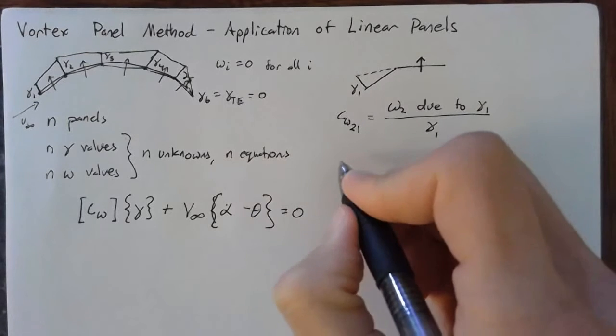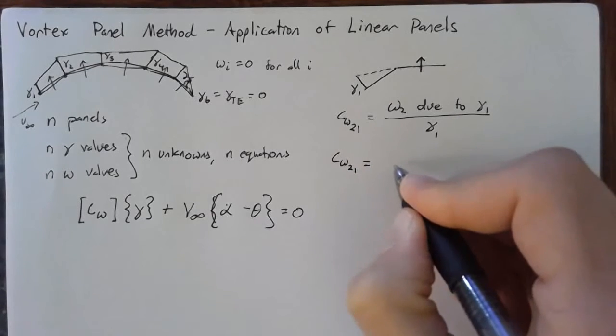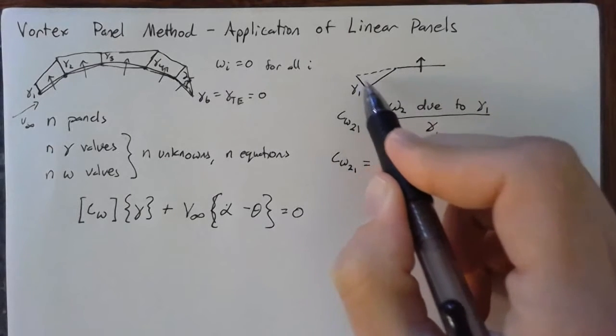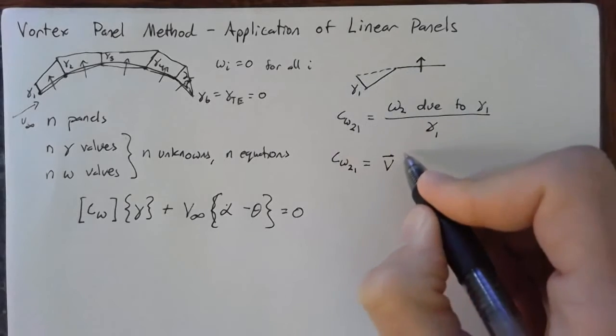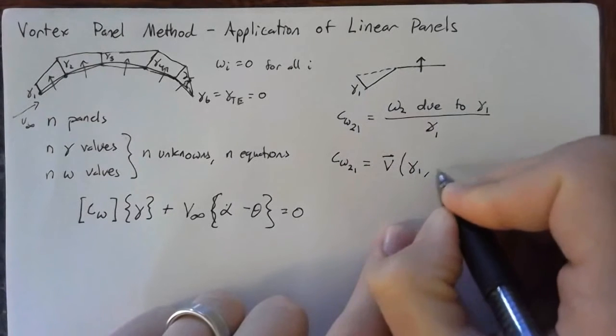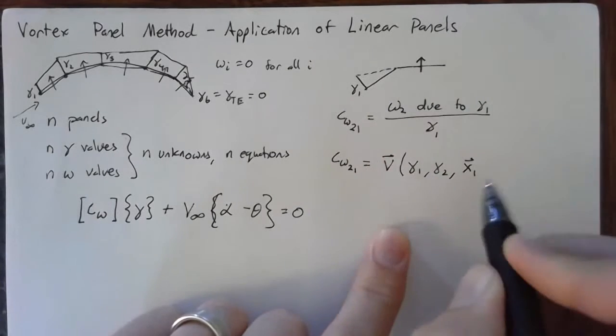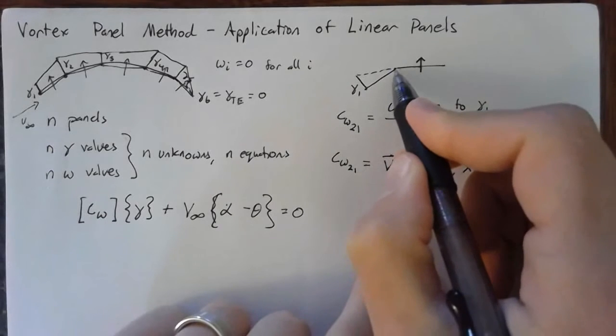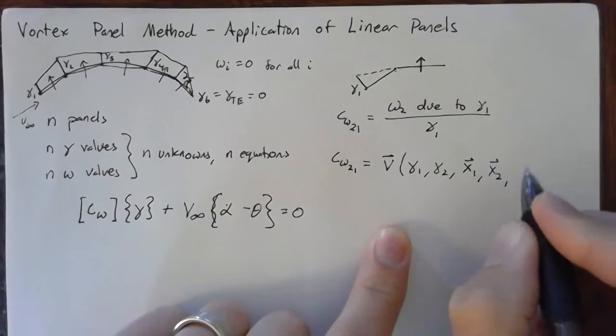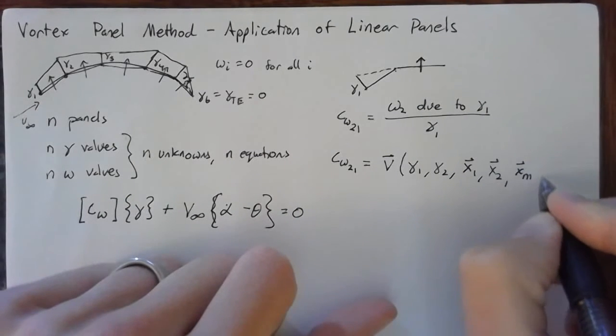So, how are we actually calculating this? Well, we're going to say that this is going to be equal to the velocity of this panel, where gamma 1 is equal to 1, and this guy is equal to zero. So the velocity of the panel can be written as a function of gamma 1, gamma 2, the position of this first point, which we're calling x1, the position of the second point, which is x2, and then finally, the point where we're trying to find the upwash, which is going to be x midpoint of panel 2.